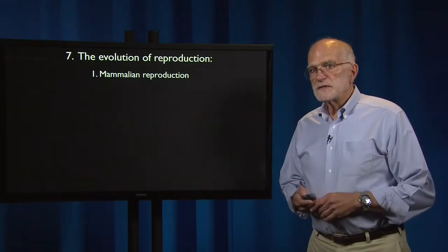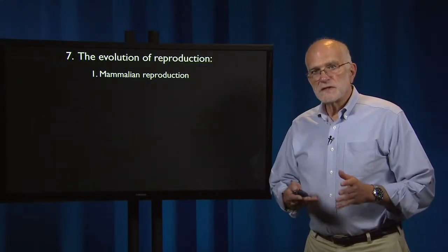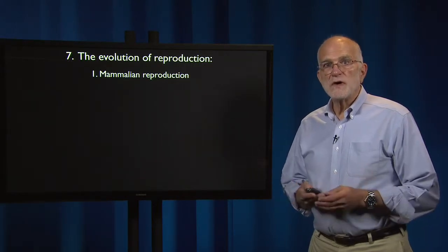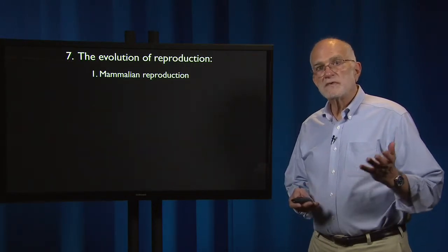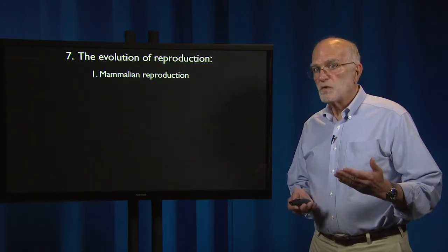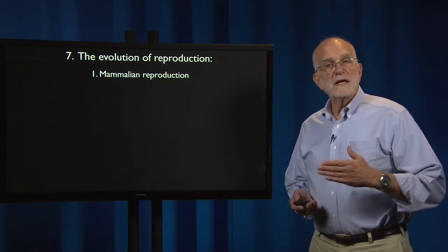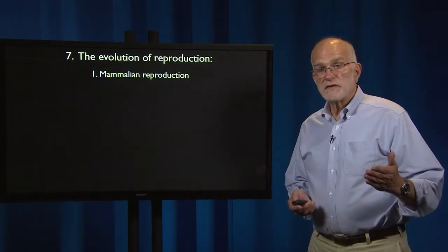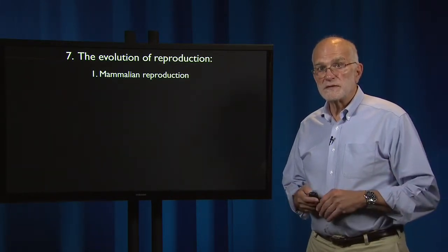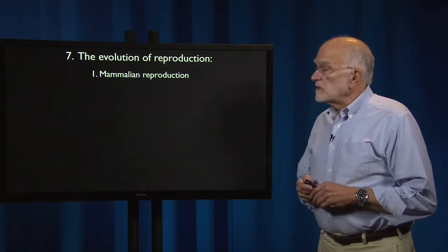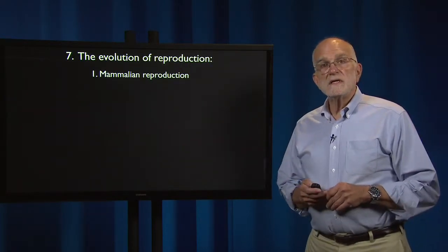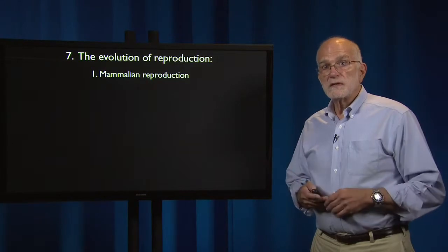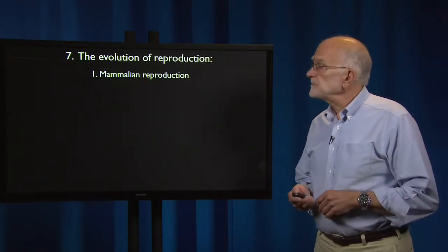Reproductive success is at the center of natural selection, and it's therefore no surprise that evolutionary thinking plays a big role in how we look at reproduction as an aspect of evolutionary medicine. We're going to start by seeing the history of the mammalian reproductive tract.